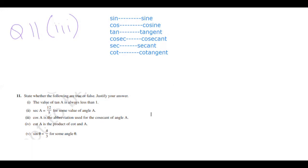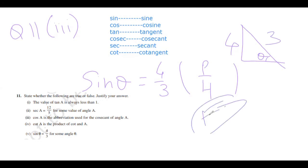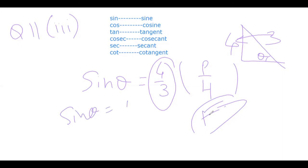Fourth part: cot A is a product of cot and A — this is false, as we discussed at the beginning of class. Cot A is not a product. Fifth part: sin θ = 4/3 for some angle. Since sin = P/H and hypotenuse is always the longest side, P cannot be greater than H. So sin θ cannot be an improper fraction — this is false.